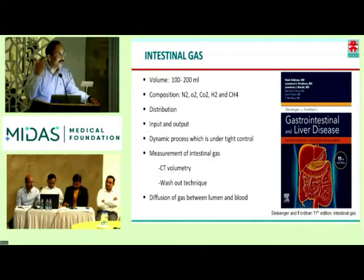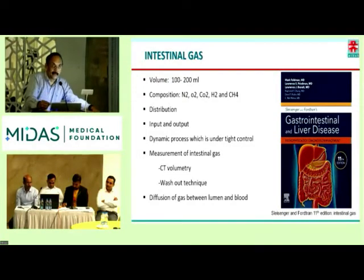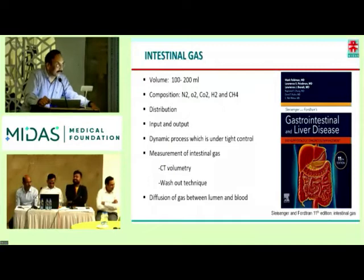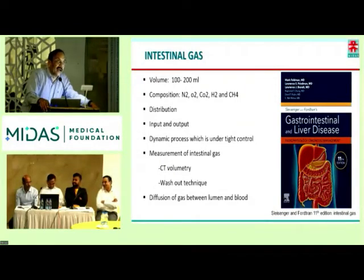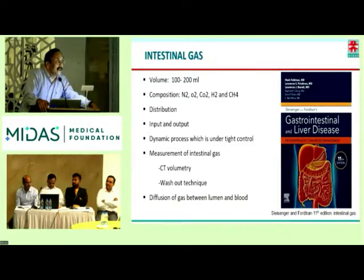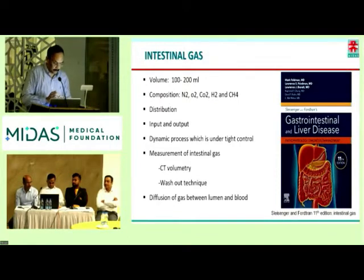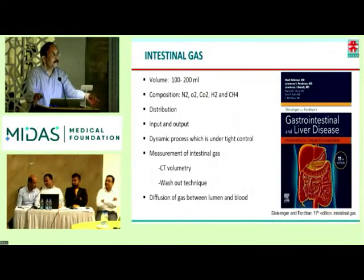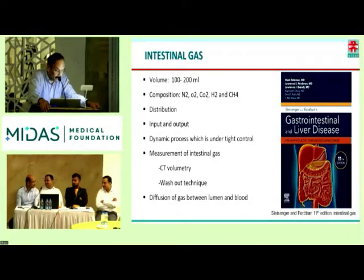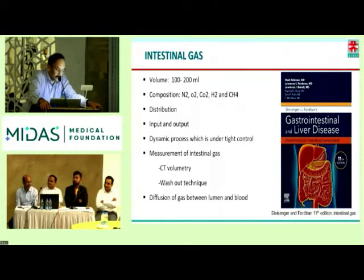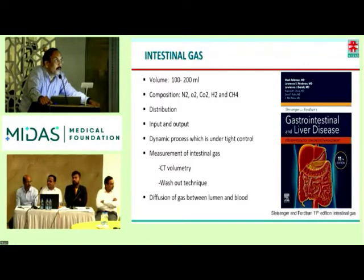The concept of gas is so important, especially in the Indian subcontinent, and everybody is obsessed with gas. But looking at the quantity, it is only 100 to 200 ml of volume. The stomach has only 10 ml of gas, the small intestine has 10 ml, and predominantly the gas is in the large intestine — around 100 ml. The composition is mainly nitrogen, predominantly nitrogen, along with hydrogen, oxygen, CO2, and methane. Their composition varies depending upon the bacterial flora, what you eat, and the substrate.